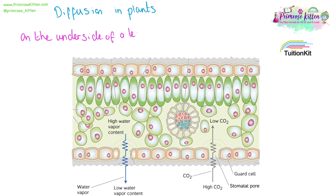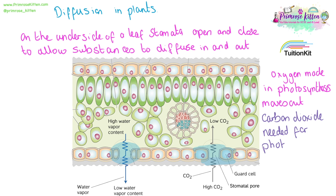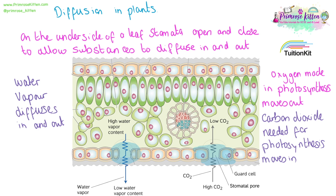Diffusion also happens in plants. On the underside of a leaf, stomata open and close to control the rate of diffusion. Oxygen made in photosynthesis diffuses out. Carbon dioxide, which is needed for photosynthesis, diffuses in. And water vapour, which is needed for photosynthesis, will diffuse in and out depending on the humidity outside the leaves.